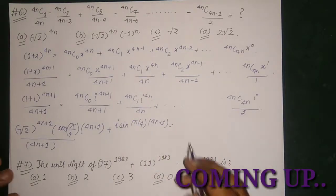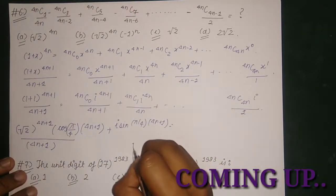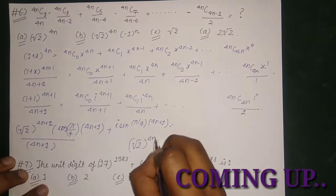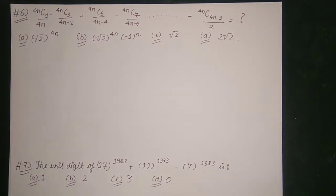We just need the real terms from this, so the real term from this part comes out to be equal to root 2 to the power 4n plus 1. Hello everyone! Welcome to my channel, Arindam Rauchadur's binomial theorem part 5. We hope you like this video. In this video, we are going to take some more questions from the concept of binomial theorem. So let's look at the first question of the video.